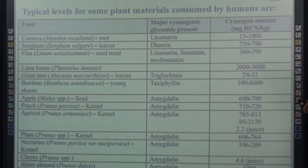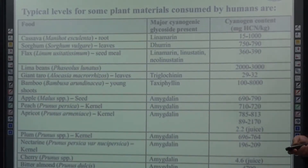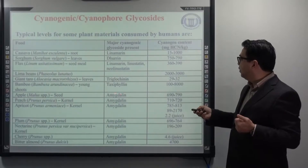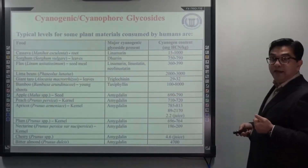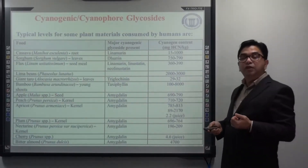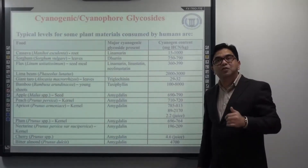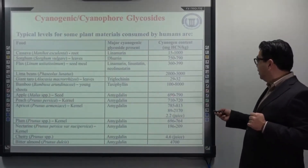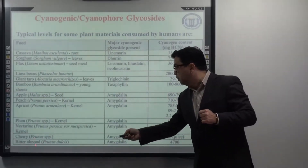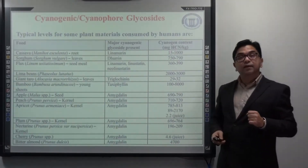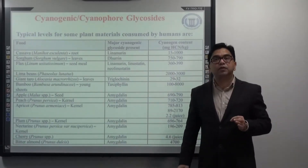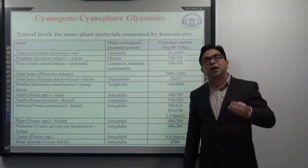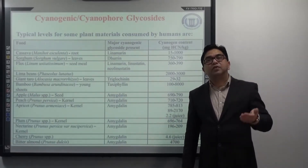Other examples of fruits and seeds containing cyanogenic glycosides include lima beans, bamboo, and apple seeds, which contain amygdalin at around 690 mg per kg. Apple seeds contain a huge amount of cyanogenic glycoside, so even though you pay for apples, make sure not to eat the seeds — they are very toxic. Similarly, the seeds of peach, apricot, and palm contain large amounts. Most importantly, bitter almond contains 4700 mg per kg. When buying almonds, avoid cheap bitter almonds, and it is better to soak almonds in water before consuming to eliminate cyanogenic glycosides.